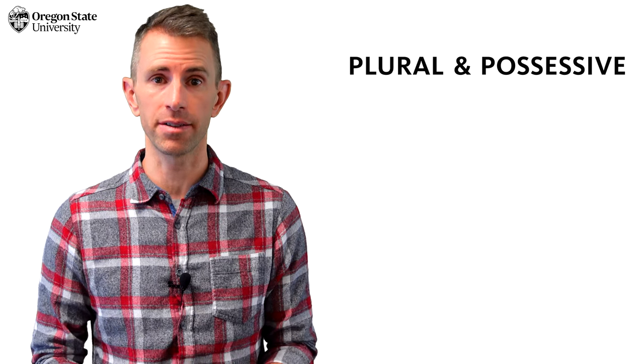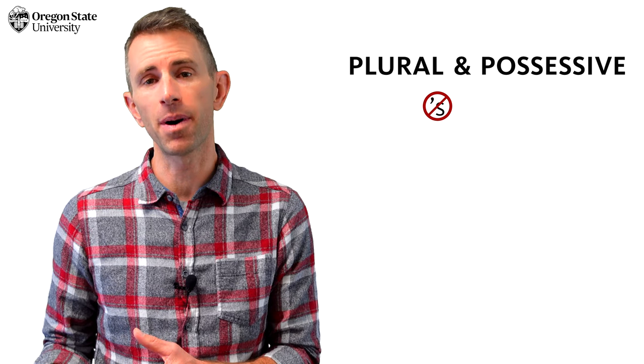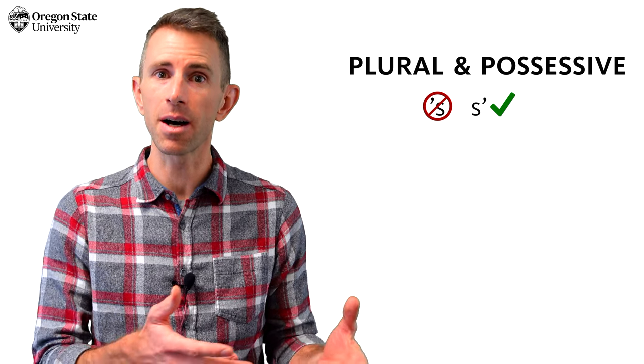This confusion comes up often when we're dealing with plurals, since they also require adding an s. For example, what happens if we want to make a word plural and possessive? What if something belongs to more than one llama? Well, rather than adding apostrophe s, we add s apostrophe.